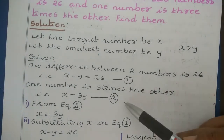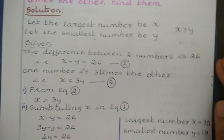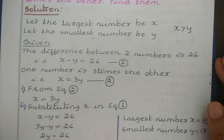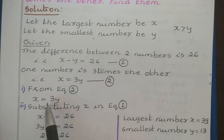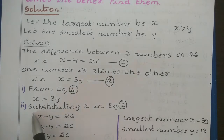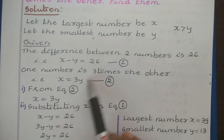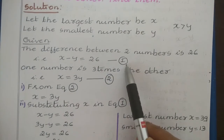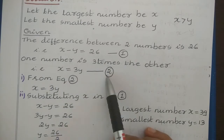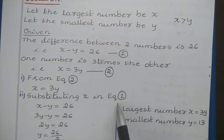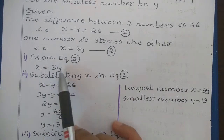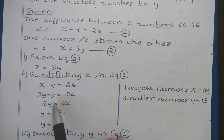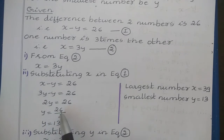Now we have two equations, so we can apply the substitution method. In the first step we find the value of a variable. In equation 2 we directly have x is equal to 3y. In the second step, substitute this value into equation 1. We have x minus y equals 26. Putting x equal to 3y gives 3y minus y equals 26, so 2y equals 26.